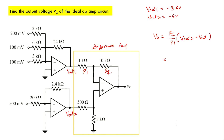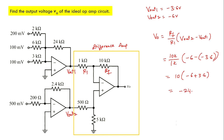Substituting the values: Rf = 10K and R1 = 1K, so V0 = 10 × (−6 − (−3.6)) = 10 × (−6 + 3.6) = 10 × (−2.4) = −24 volts. This is our final V0. If we have multiple op-amps like this, we can solve the problem by splitting it into different parts — this is the easiest method to find the final output V0.